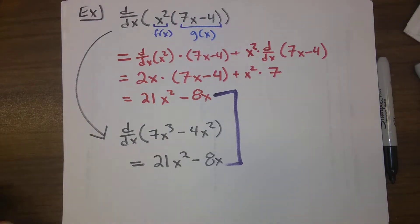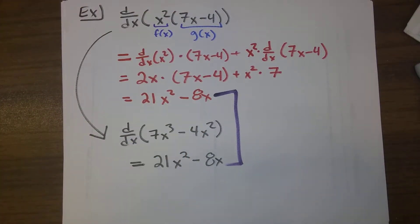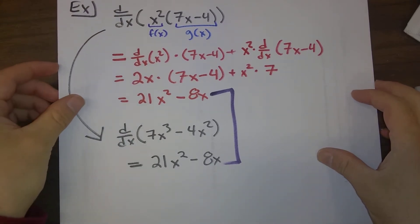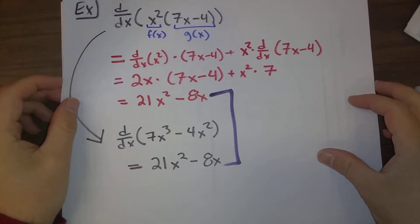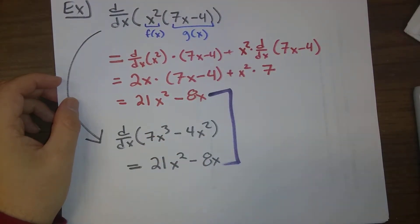You might wonder, in this case, why are we bothering to use the product rule? Because it looks like one multiplication and a very easy differentiation. In this case, yes, it probably would have been easier to just do it this way. However, it's good to have the product rule in your pocket because you could have more and more complicated products where you wouldn't necessarily want to expand everything out. If you don't want things expanded out, it's probably best to just use the product rule. Here's another example.